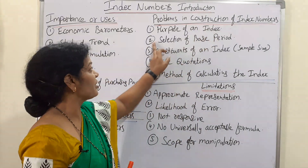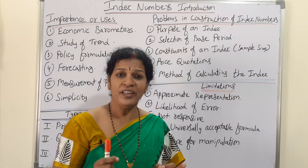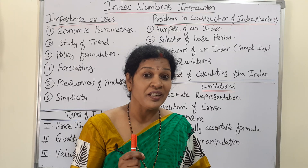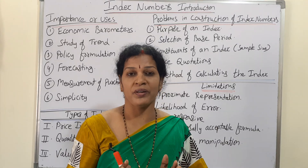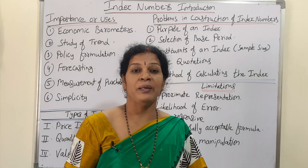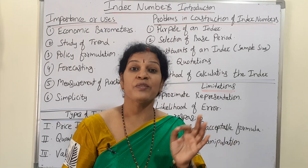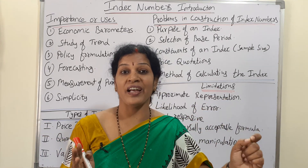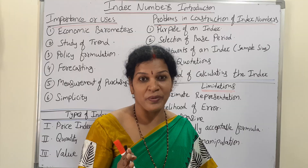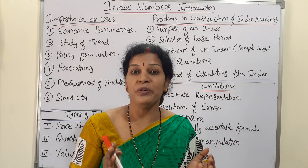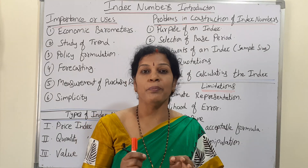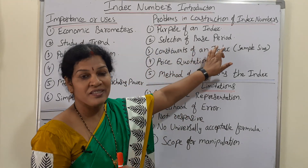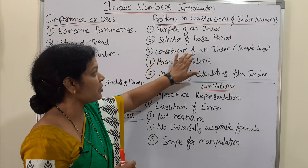The second problem is selection of the base period. In index numbers we take one year as the base period, and which year to take as base period is very important. Most of the time people take the first year as base year and calculate for next years. Some people take the middle year as base. How you take it and how it is going to represent the data is quite important — selection of the base year or base period is a major drawback.